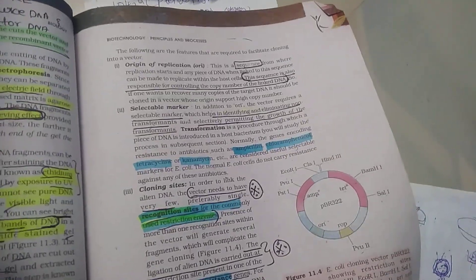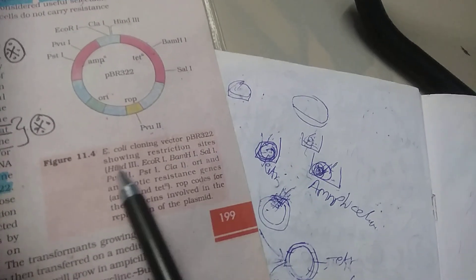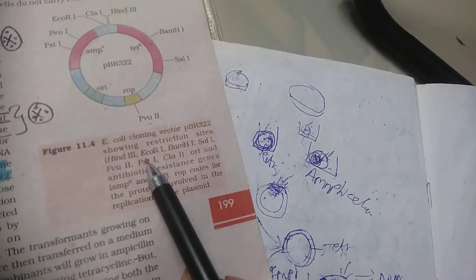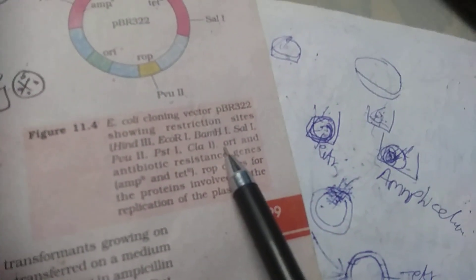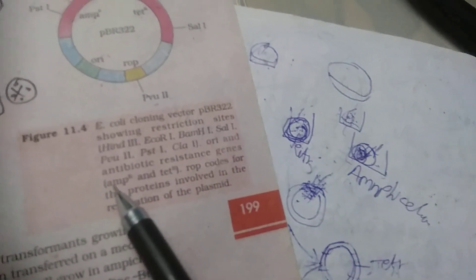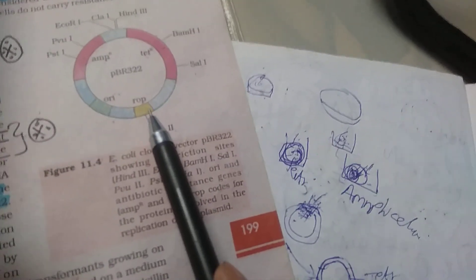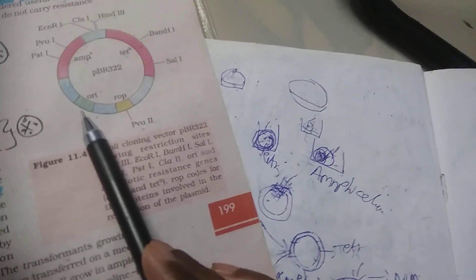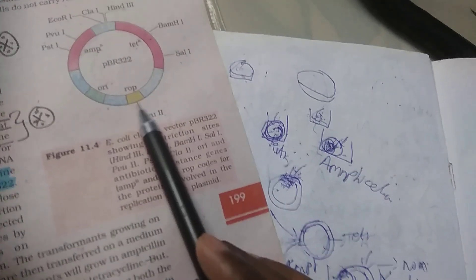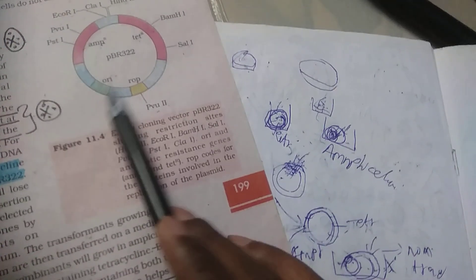The cloning vectors we discussed include the plasmid cloning vector pBR322 showing restriction sites including EcoRI, BamHI, SalI, PvuI, PstI, and others. It has an origin of replication (ori) and antibiotic resistant genes: ampicillin and tetracycline. The plasmid also contains proteins involved in replication.